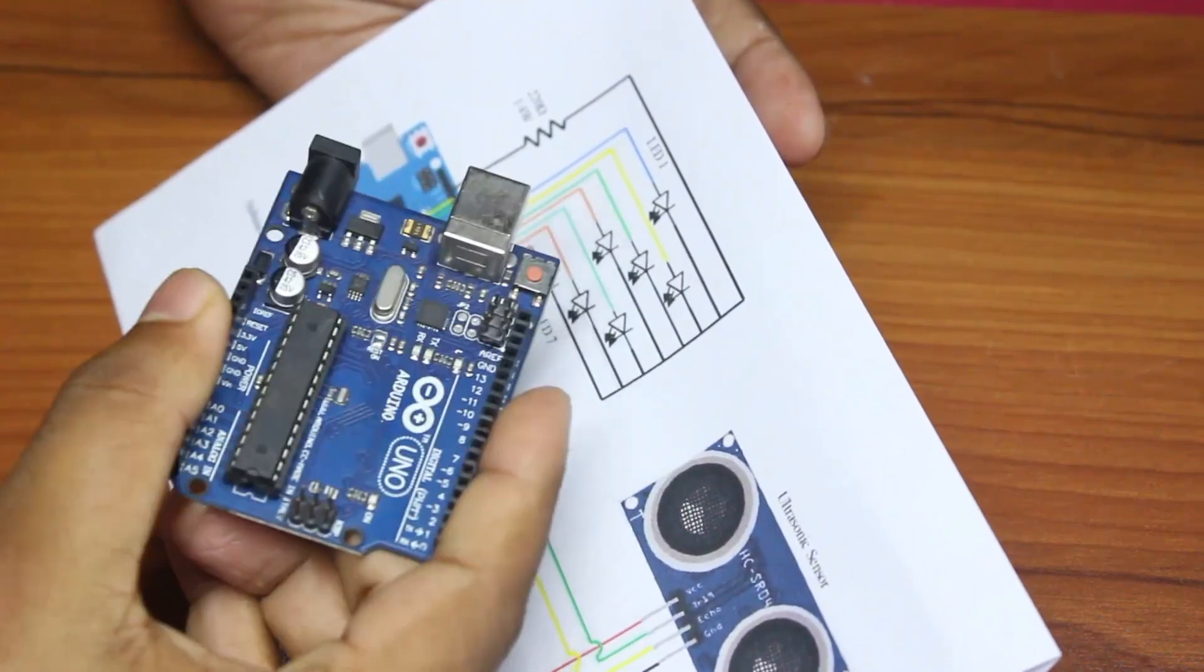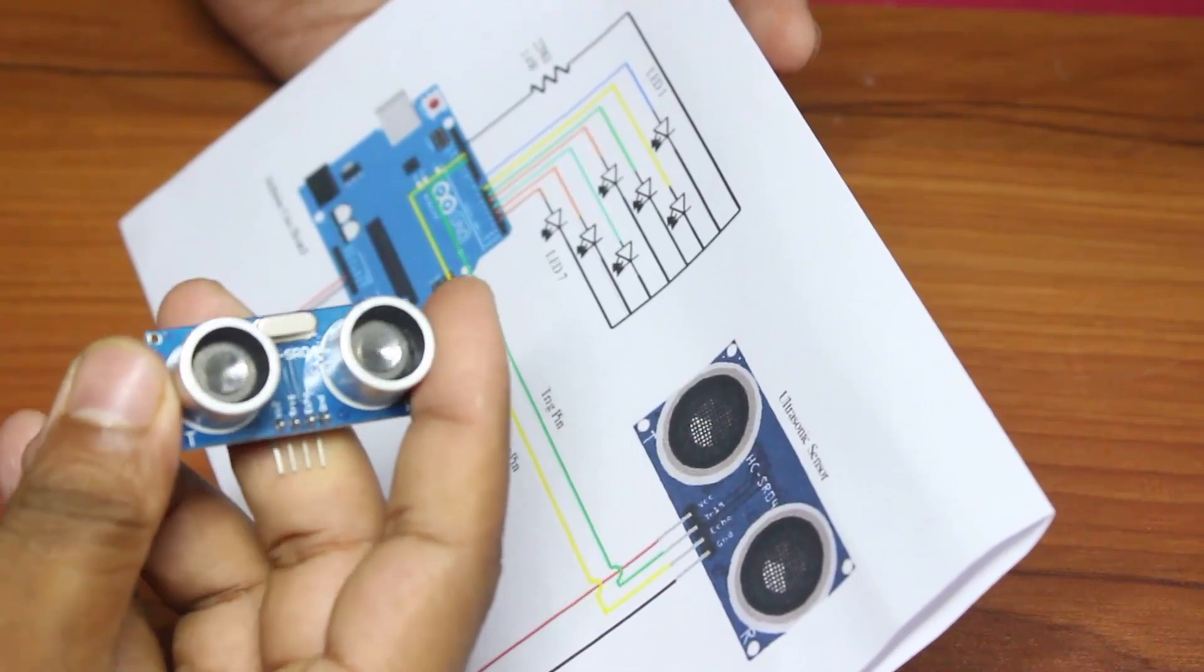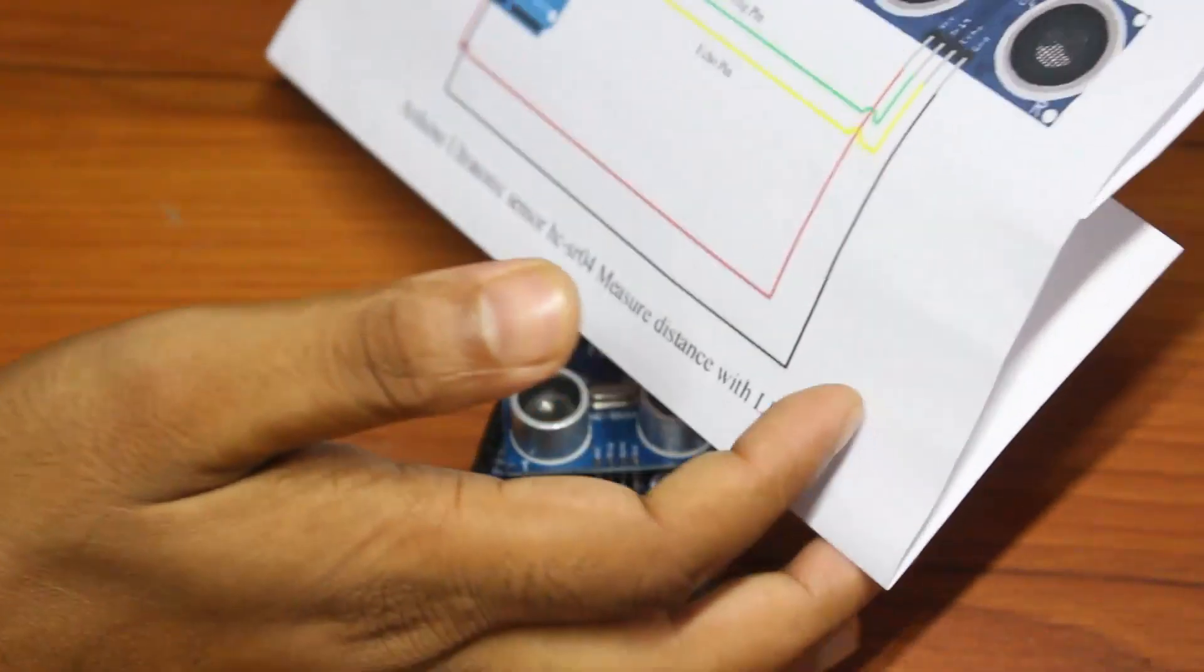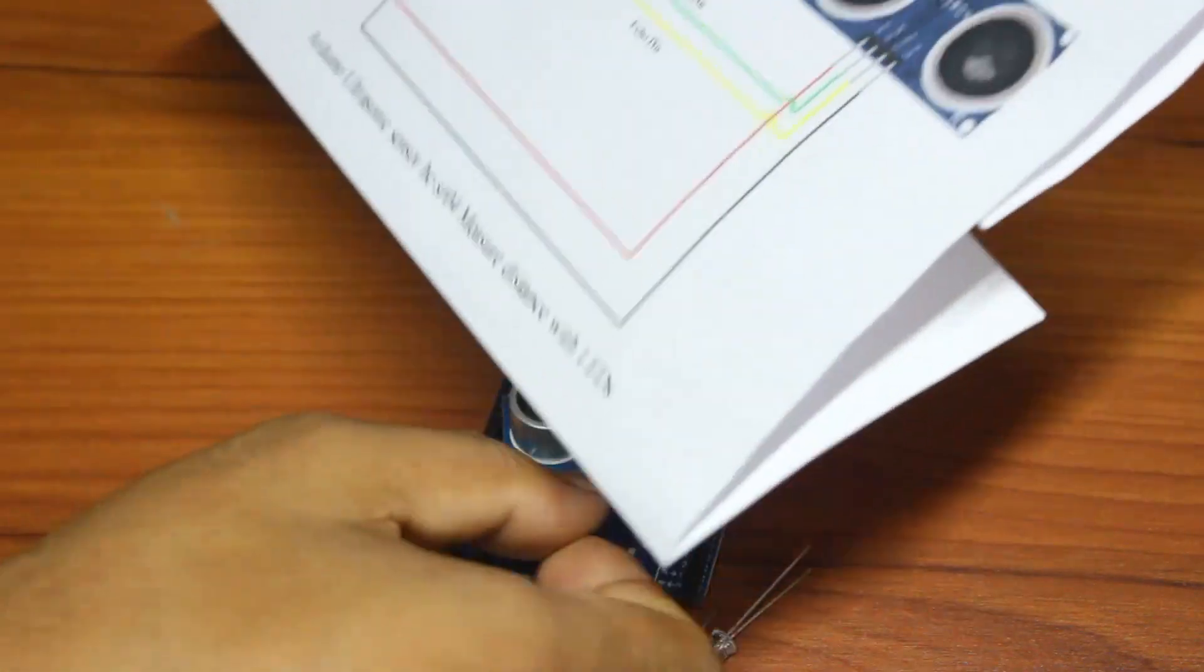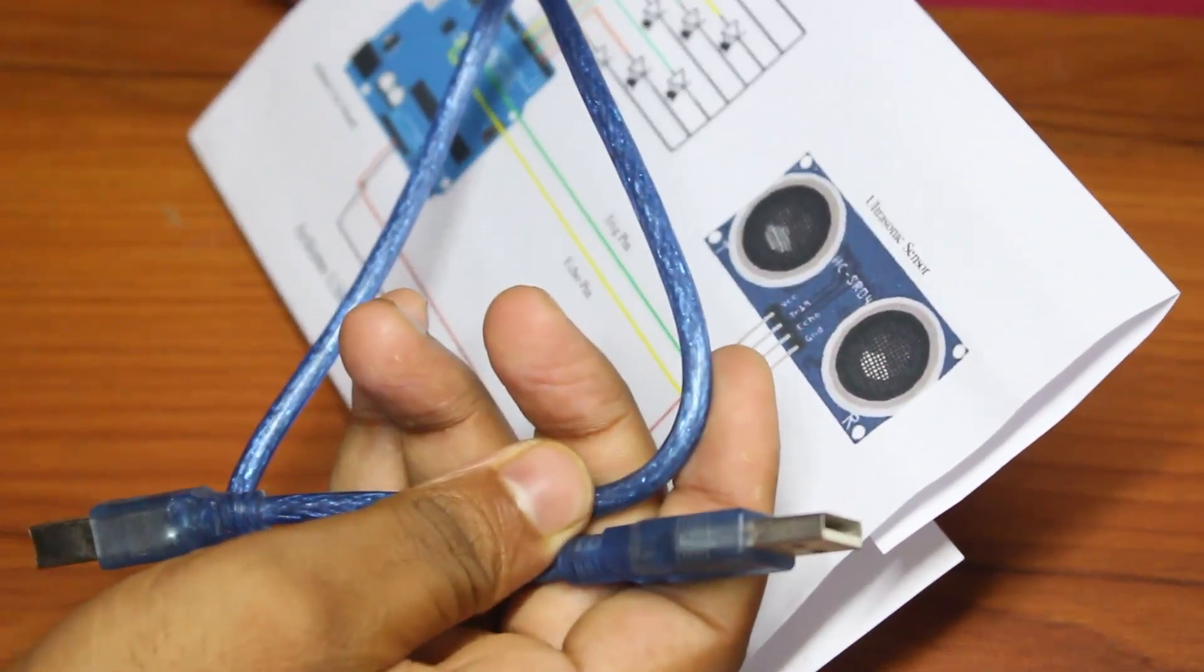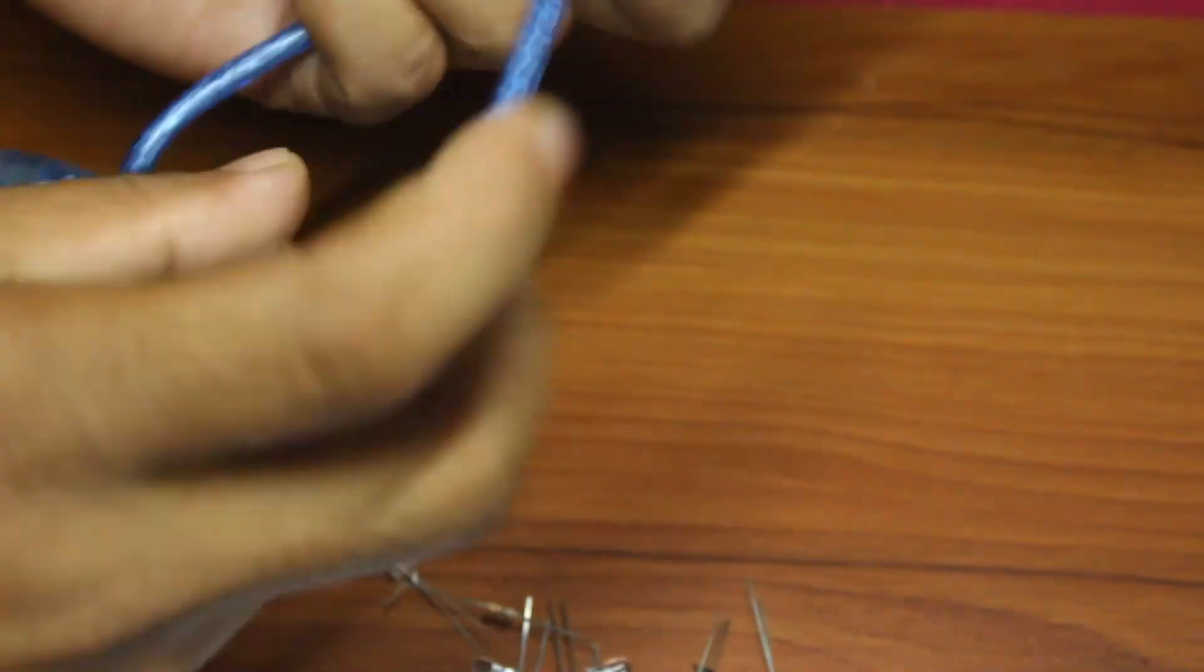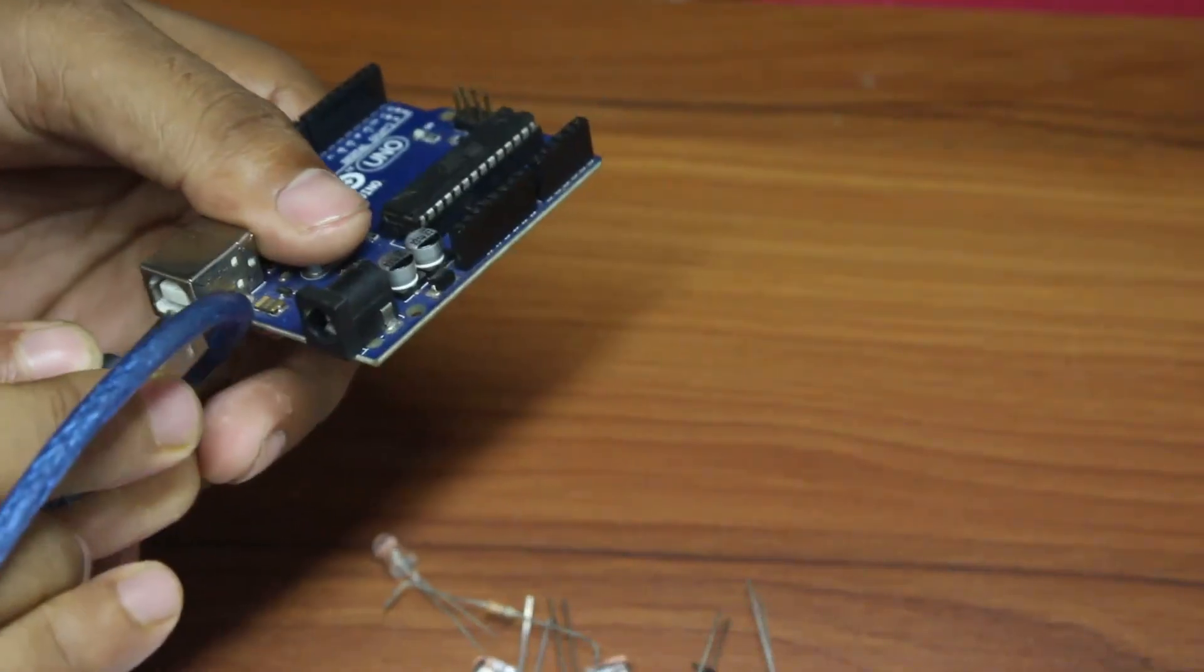You'll need all the LED bulbs, seven pieces, one resistor, jumping wires, and USB connector. First step, connect the Arduino board.